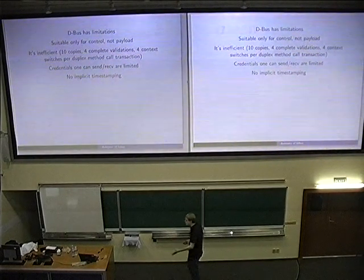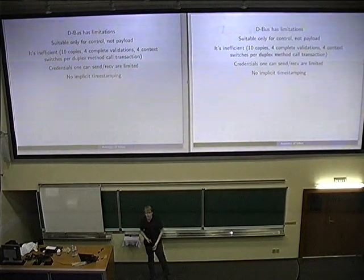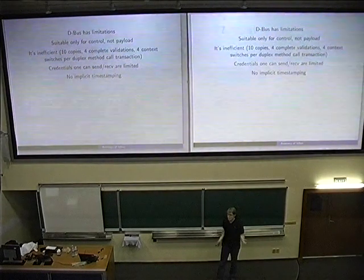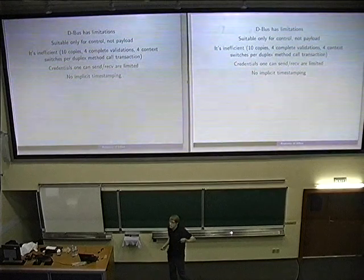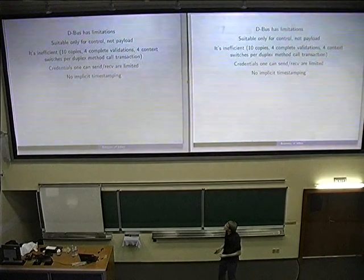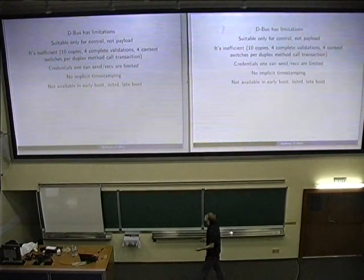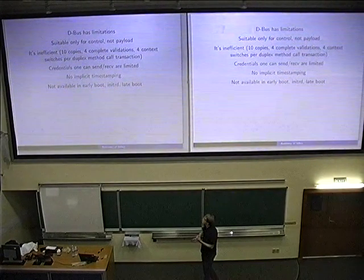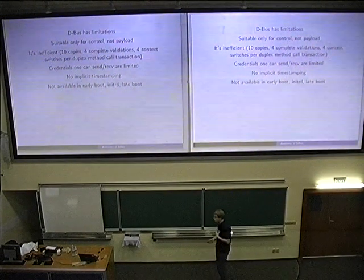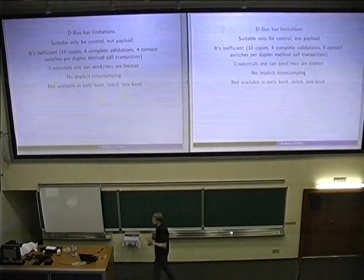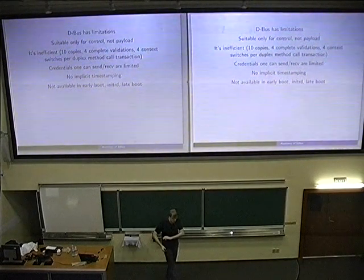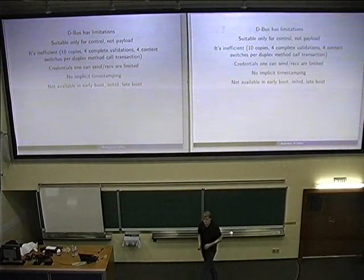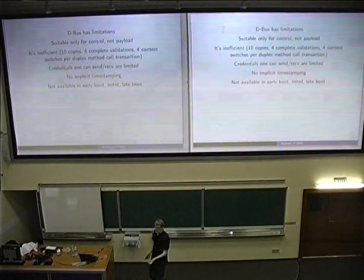There is no implicit timestamping, which is highly interesting if you want to order events and reconstruct timing behavior. Since we are an operating system where everything is best effort, you want to know when something actually started. D-Bus is also not available in early boot — it starts as a normal service in late boot — so for us working on systemd with early boot, whatever we want to do in early boot, we cannot use D-Bus and have to resort to gross hacks for IPC.